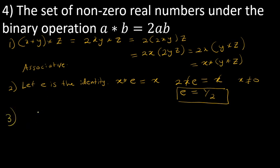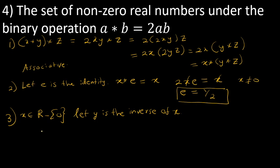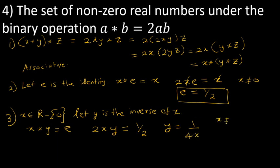Let's find the inverse. Let x be any non-zero real number and let y be its inverse. Then x star y should equal E, which is one-half. So 2xy equals one-half. Since x is not equal to zero, I can solve for y: y equals 1 over 4x. The inverse of any element x in this group is 1 over 4x, and since x is non-zero, y is also non-zero, which is consistent with the group being non-zero real numbers.